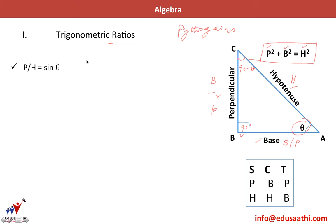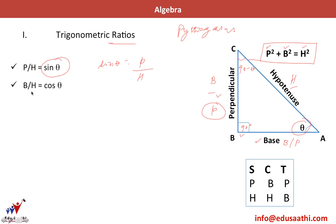Now let's discuss trigonometric ratios. Sin theta is defined as the perpendicular — that is, the side opposite to angle theta — divided by the hypotenuse H. Cos theta is defined as the base, the side adjacent to theta, divided by the hypotenuse H. Tan theta is defined as perpendicular divided by base.